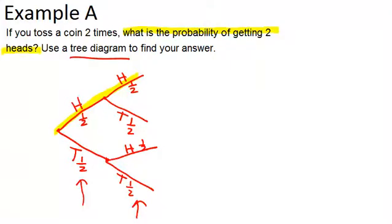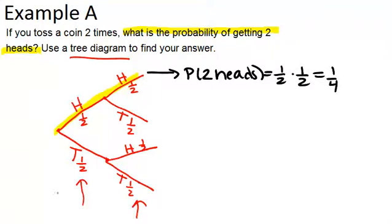Now because our events are independent we can multiply the probabilities to figure out the probability of each ultimate outcome. So the probability of two heads will be one half times one half which is one fourth.